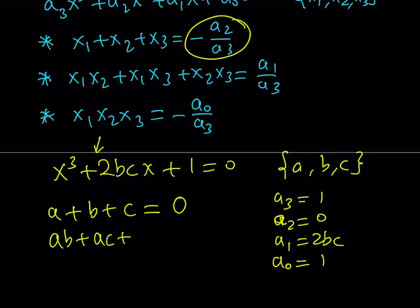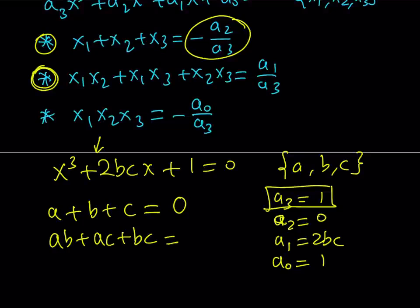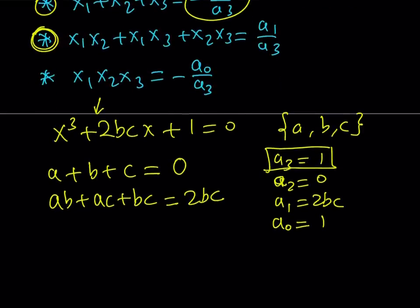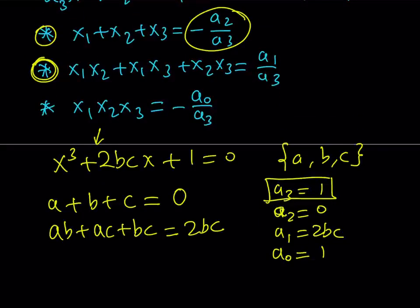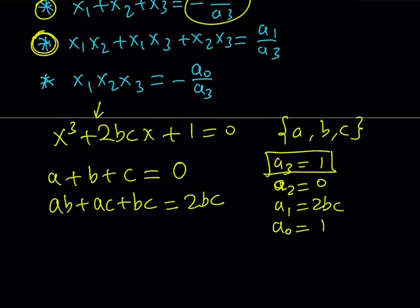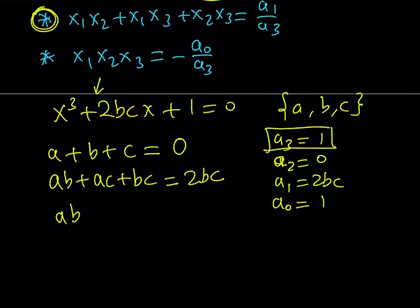The two-way products ab plus ac plus bc equal a1 over a3, where a1 is 2bc and a3 is 1, so this equals 2bc. And the product of all roots equals negative a0 over a3. Since a3 is 1, it's just negative a0, and a0 is 1, so abc equals negative 1.